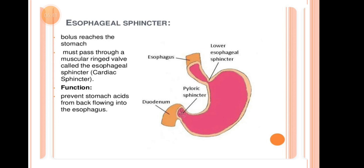What is the esophageal sphincter? As the bolus reaches the stomach, if the person lies down or sits and the body position changes, the sphincter prevents food from coming back out — preventing regurgitation.